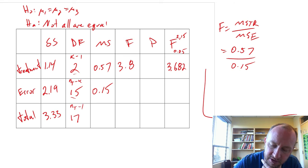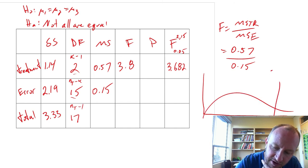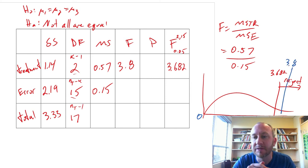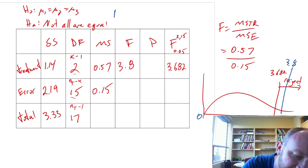So here we have F-distribution. Here we have our F of 3.682, that defines our rejection space. Our test statistic is 3.8. Given that this is 0 out here and it's increasing as we move further out, 3.8 is larger than 3.682. So we have a test statistic that falls into our rejection space, so we can reject.